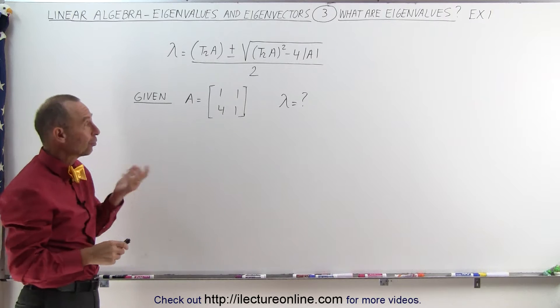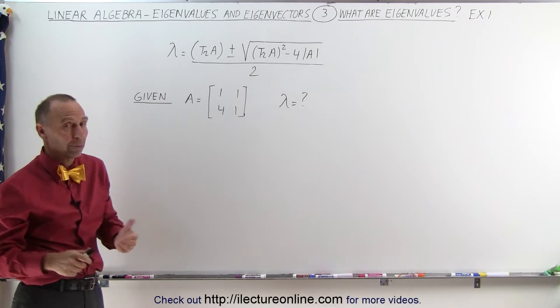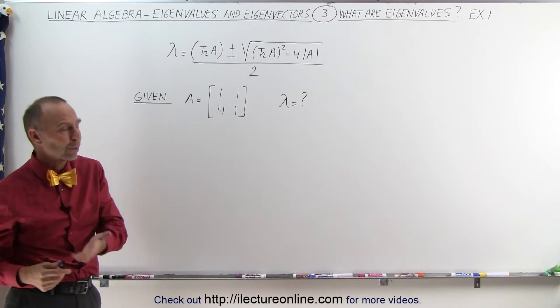It could be that there's none, one, or potentially two eigenvalues for a 2x2 matrix. For a 3x3 matrix, there's potentially three eigenvalues.